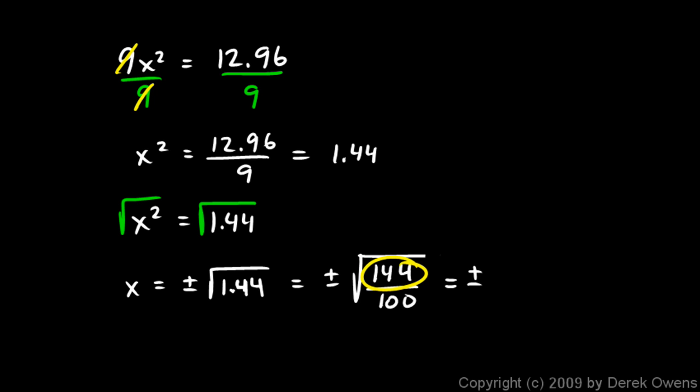144 and 100 are both perfect squares, so this is plus or minus, and let's just square root each of these. The 144 square rooted is 12, and the 100 square rooted is 10, so we get 12 over 10, plus or minus 12 over 10. You could simplify that to plus or minus 6 fifths, or write it as a decimal, plus or minus 1.2.